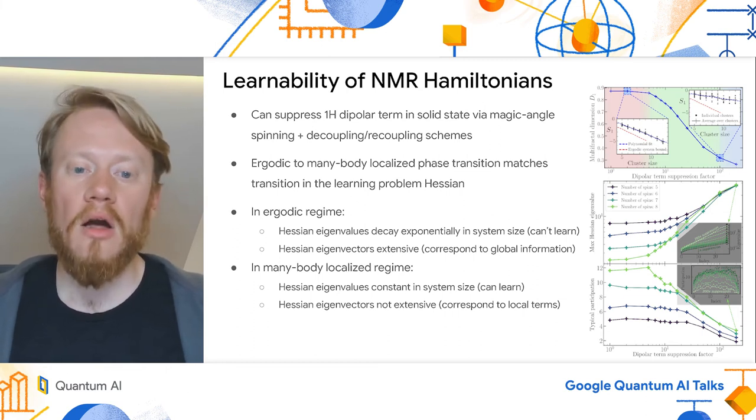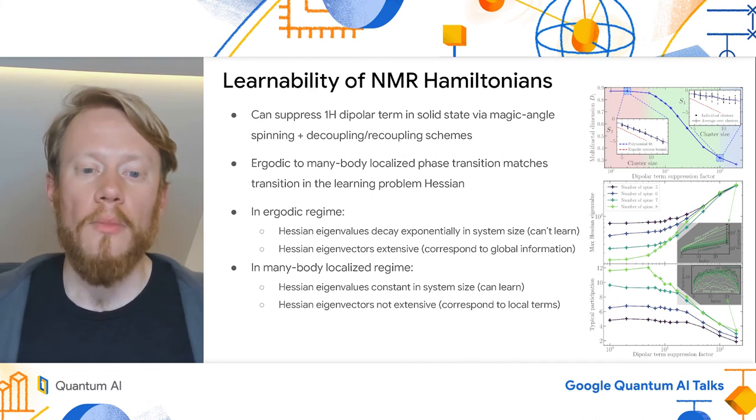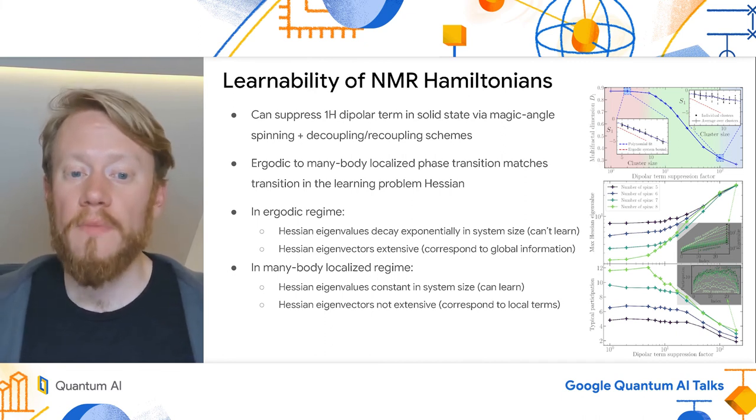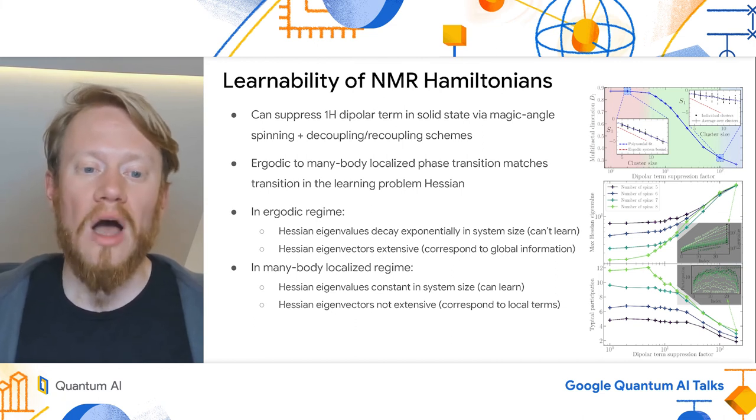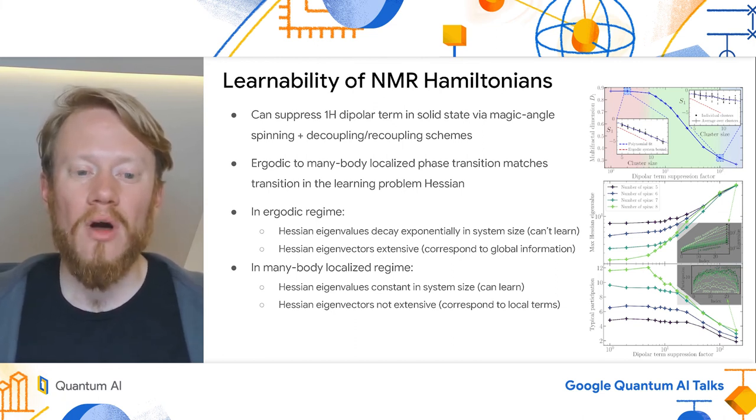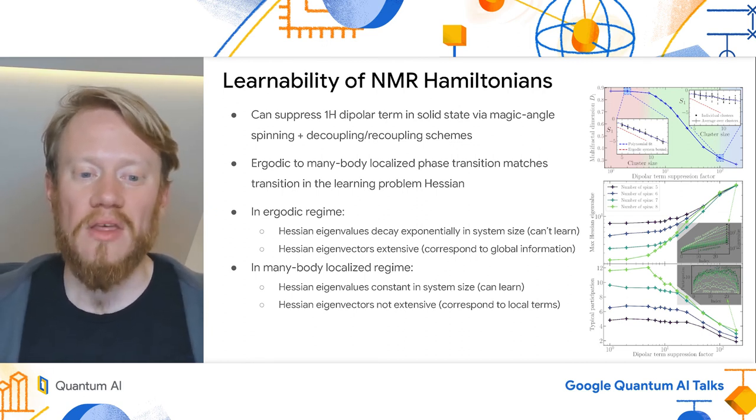As mentioned previously, in an NMR experiment, we have multiple handles on the strength of the dipolar coupling term. The most prominent of these are the ability to physically spin the sample and the ability to create composite decoupling pulses. Rather than simulate these exactly, in this work, we assumed the existence of a free parameter to suppress the dipolar term, and we looked at our systems as a function of this suppression.